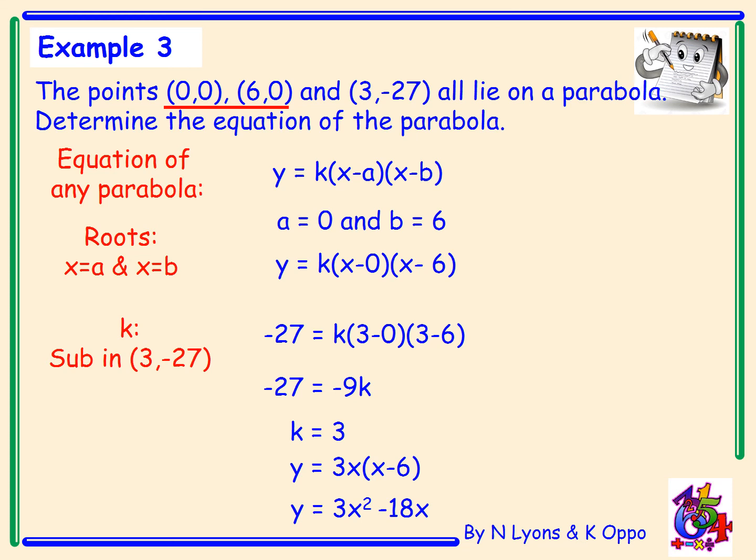There's no constant term at the end, and that's fine — there's no c value. That makes sense because the parabola cuts the y-axis at the origin, so we wouldn't expect a plus c value at all.